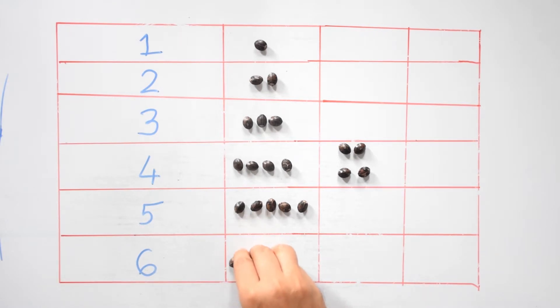Next we'll take six. Now dividing six we'll get three in one group, three in another group, so we have two groups of three.